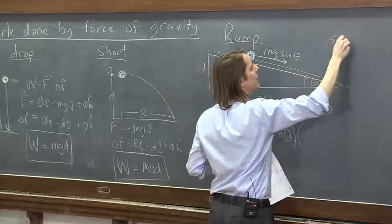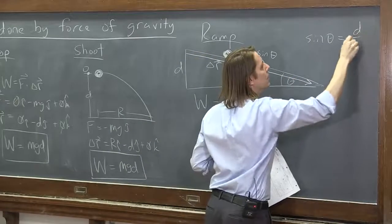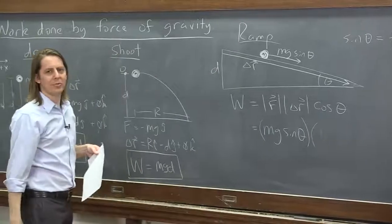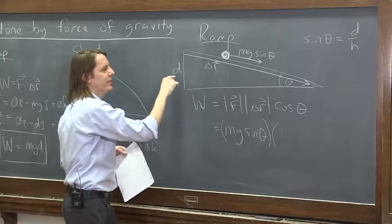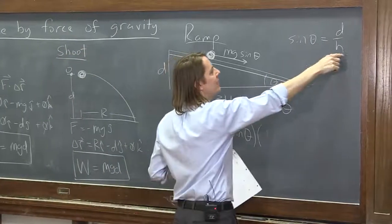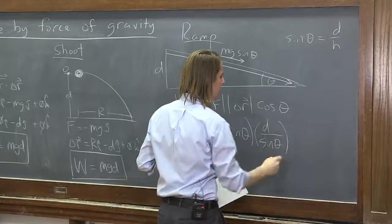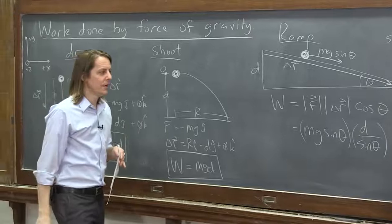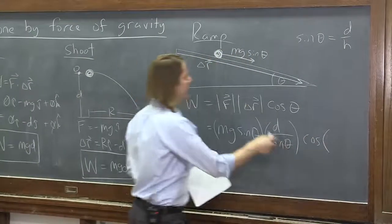Well, sine theta is the opposite d over the hypotenuse. And this is a case where we actually want the hypotenuse. Usually you're given the hypotenuse and you break it into components. This is a little different. We're given one of the sides. So actually, the hypotenuse we want is d over sine theta. That's the magnitude of the displacement. And then we need the cosine of the angle between them.